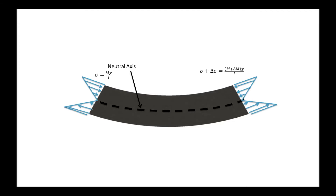These forces and moments will create stresses. For this particular cross-section, it will be tensile below the neutral axis and compressive above the neutral axis, with sigma equal to MY over I, and on the other side sigma plus D sigma equal to M plus DM times Y over I. The compression will be above the neutral axis and tension below.